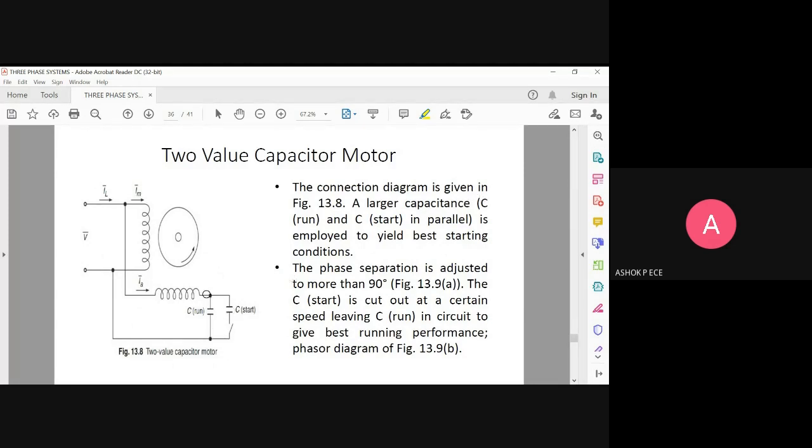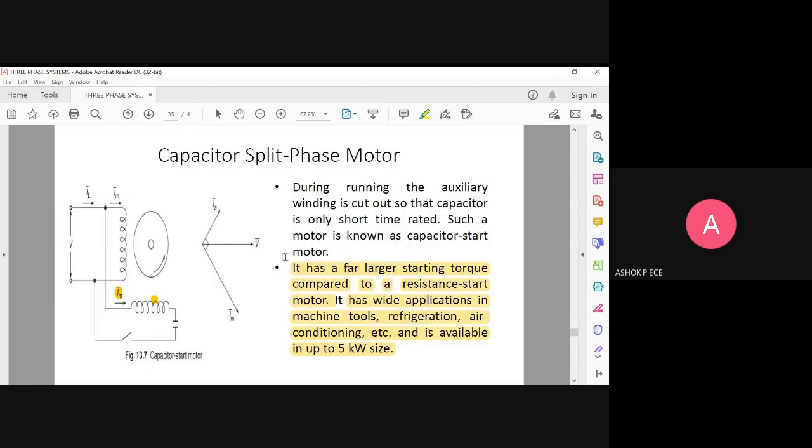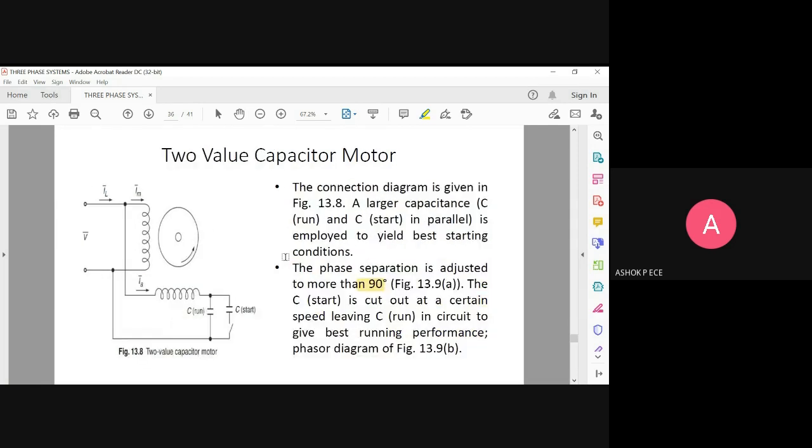A larger capacitor is used for running and a smaller capacitor is used for starting. This will give very good starting for your motor. Whenever you use a capacitor, the current and voltage will be out of phase by 90 degrees, so the phase lag will always give you the best advantage. Compared to the capacitor split-phase motor, the two-value capacitor motor is going to give very good starting for your induction motor.